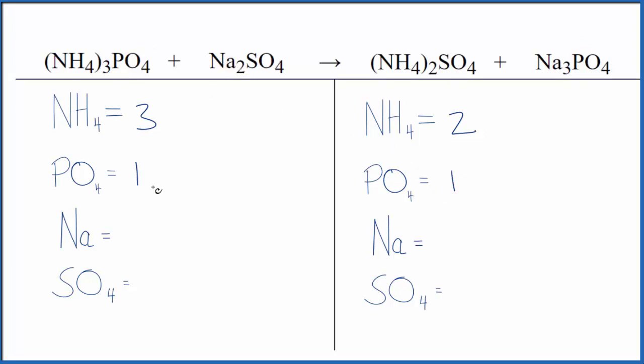Sodium, I have two sodiums here, and then over here I have the three sodiums. And then for the sulfate, I have a sulfate here and here. So I have one sulfate on each side of the equation.